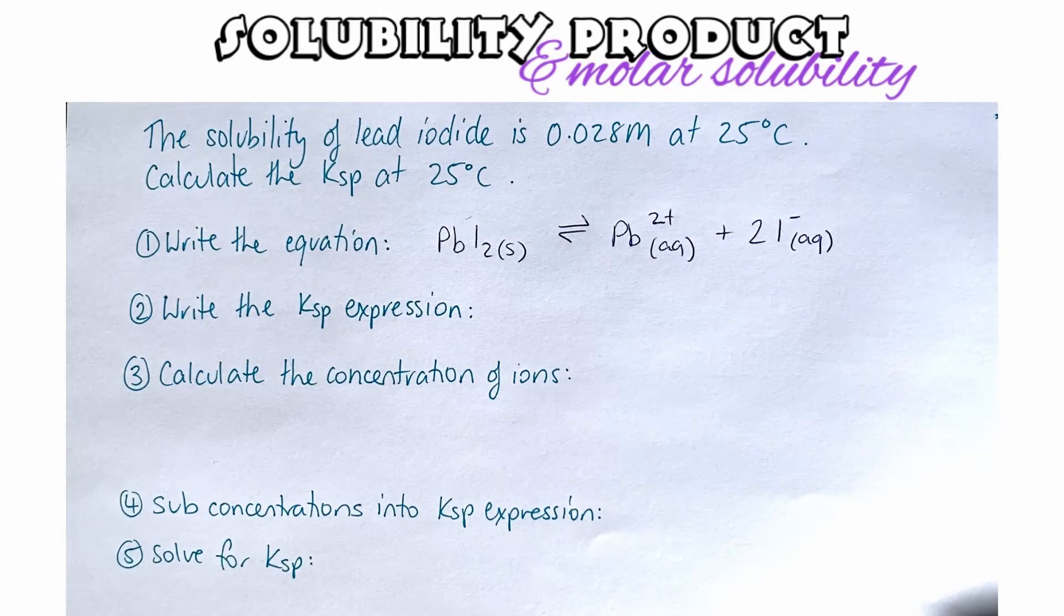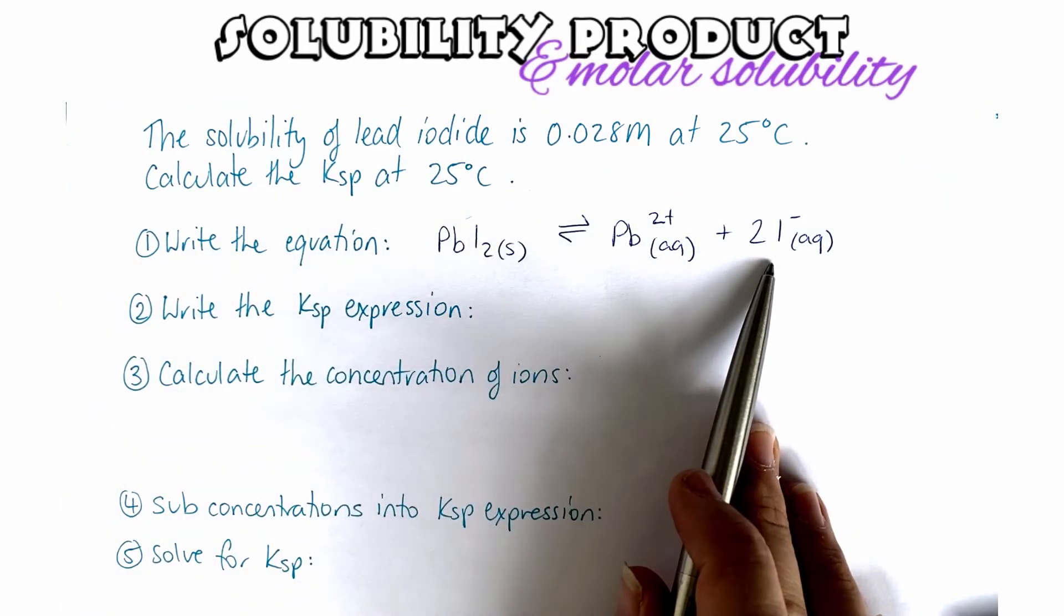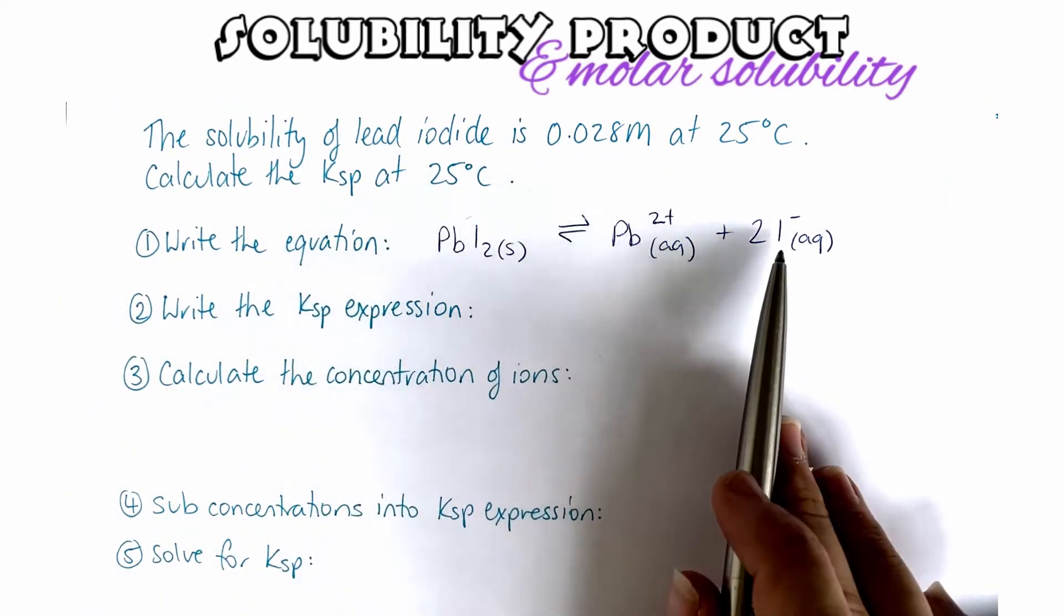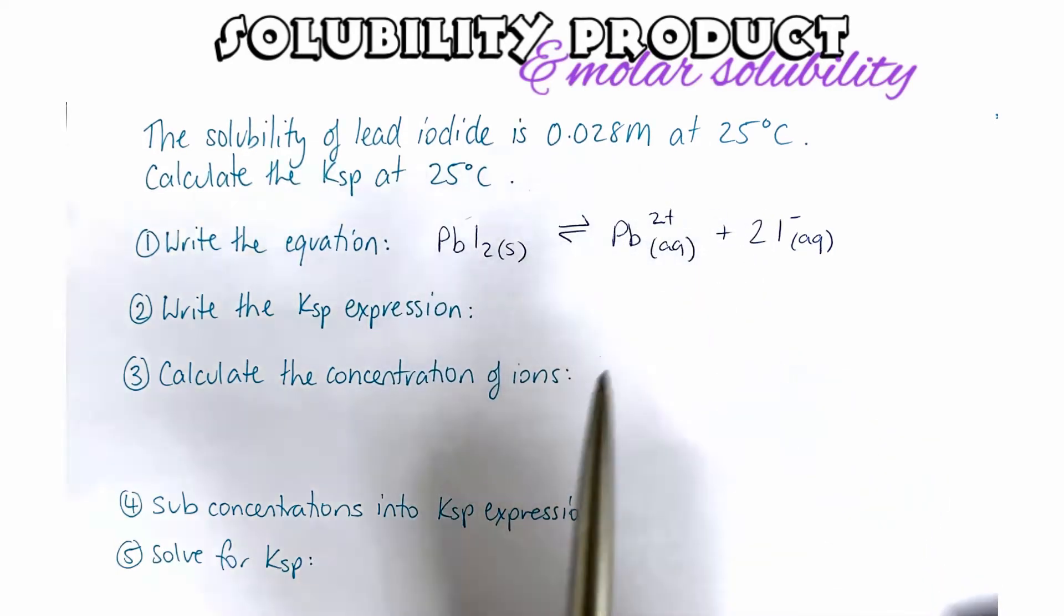Step number two is to write the Ksp expression. Remember, our expression only contains our ions, and it is taken to the power that is the molar ratio.